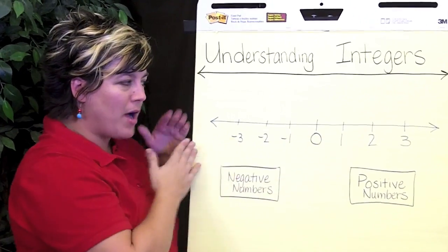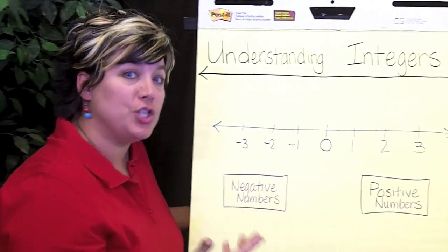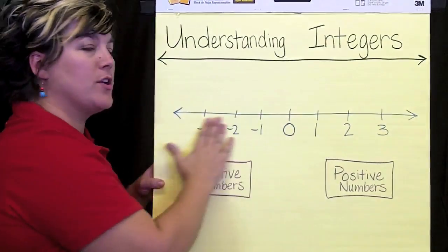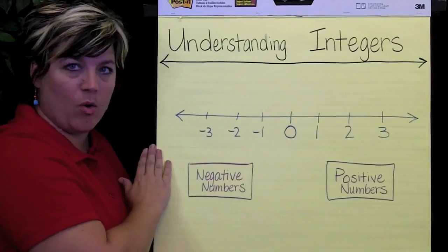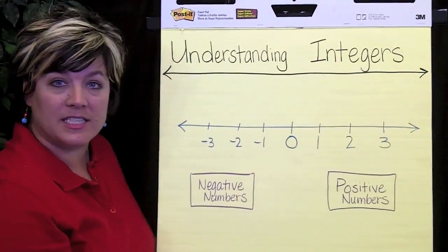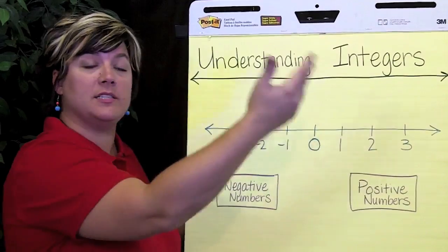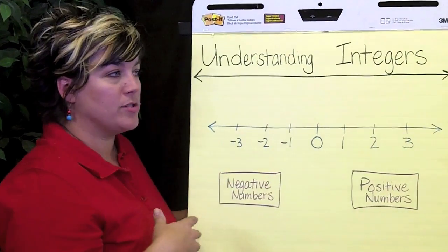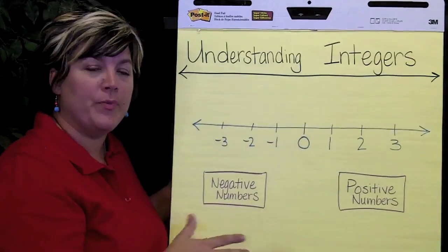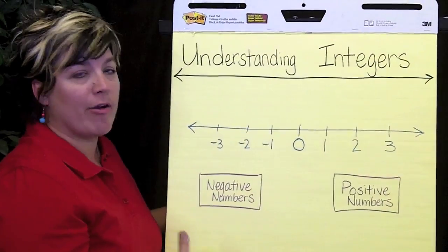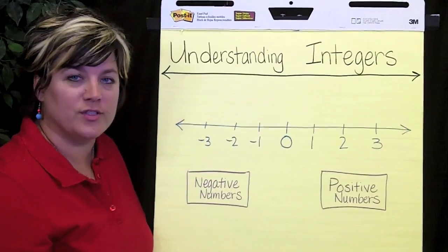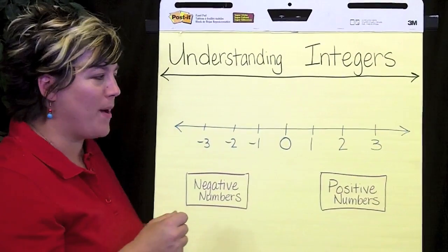When we're using positive and negative numbers, or integers, we're just using them to describe numbers that are to the right of zero or to the left of zero. We also use these numbers when talking about temperature — we might have negative 30 degrees or positive 30 degrees. We might also use them to describe land that's below sea level or above sea level. There are lots of places in everyday life where we use integers; we just don't ever call them integers.